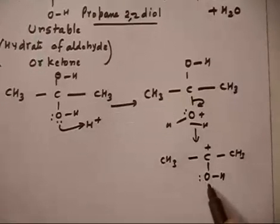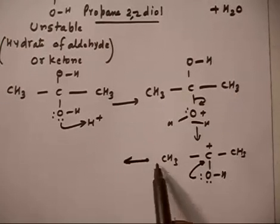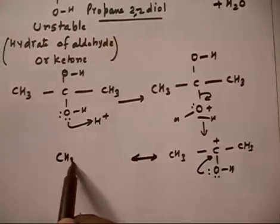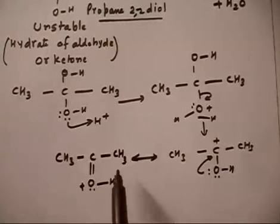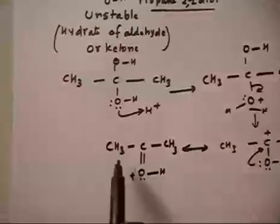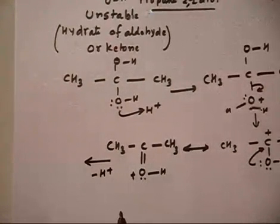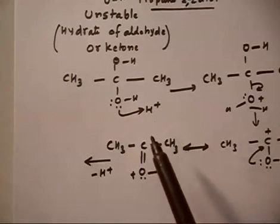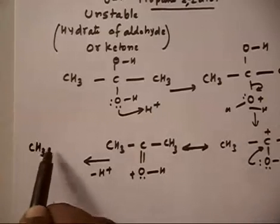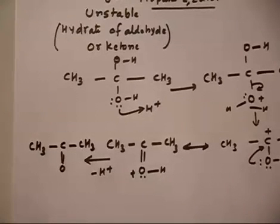The carbocation has a resonating structure: CH3C(=OH+)CH3. In the next step, H+ is lost from the positively charged oxygen — since H+ was added in the first step as acid catalyst, it must be lost in the last step. Losing H+ gives CH3COCH3, which is acetone.